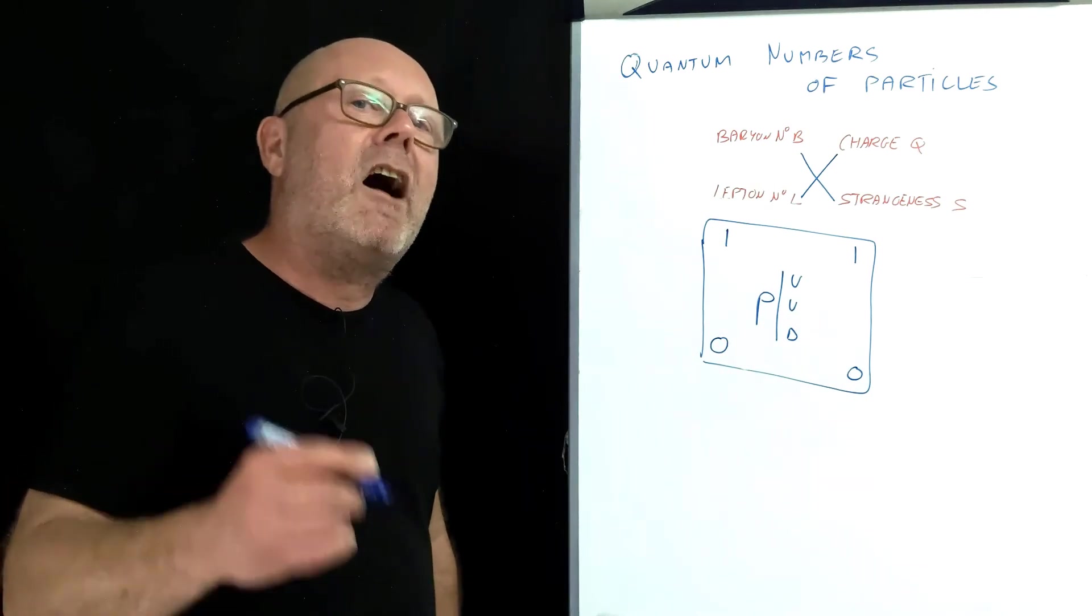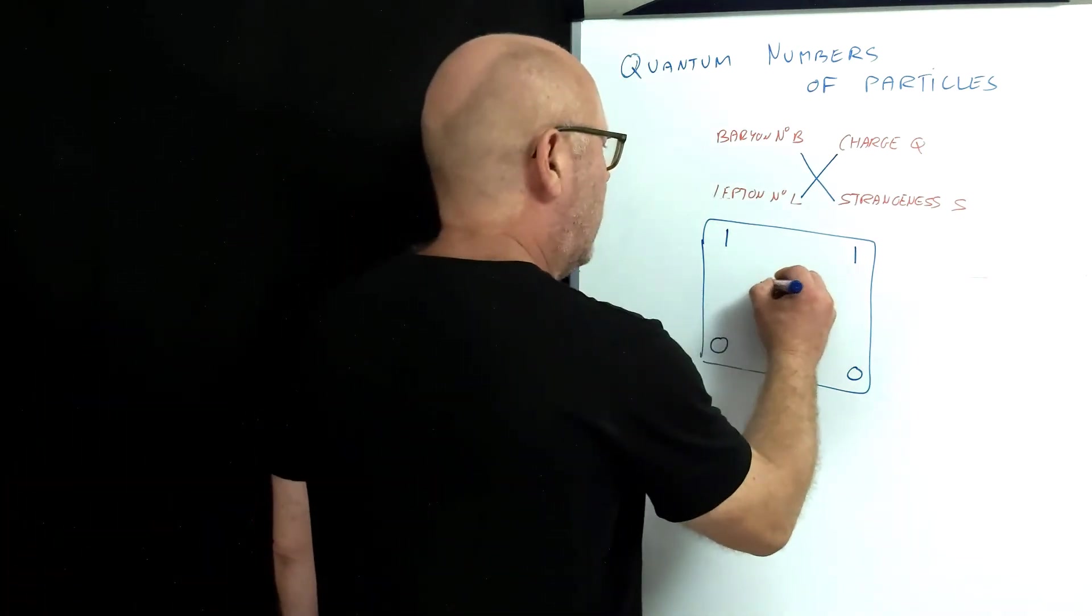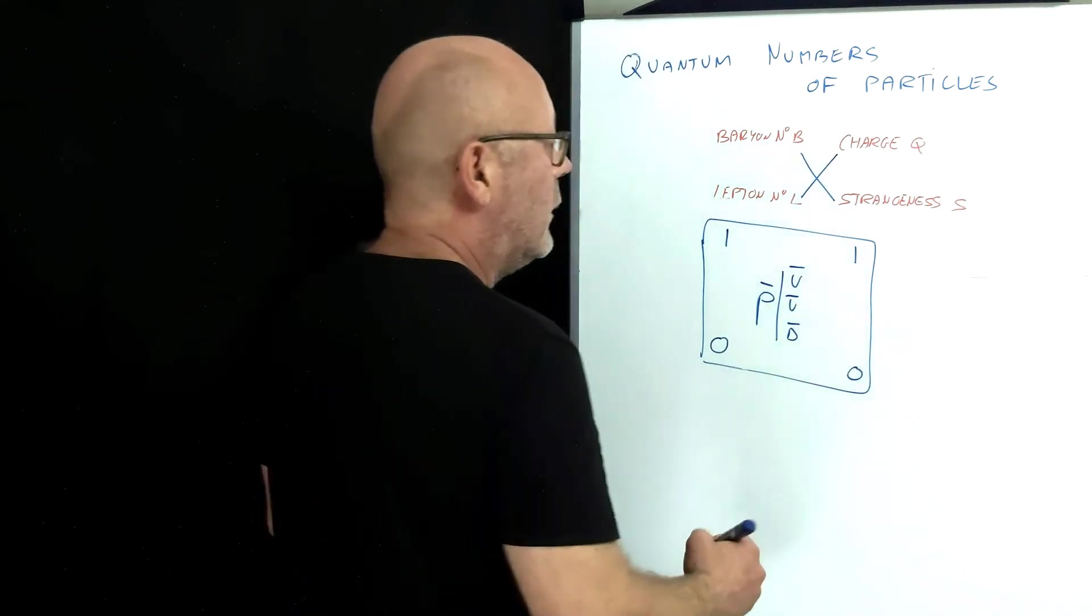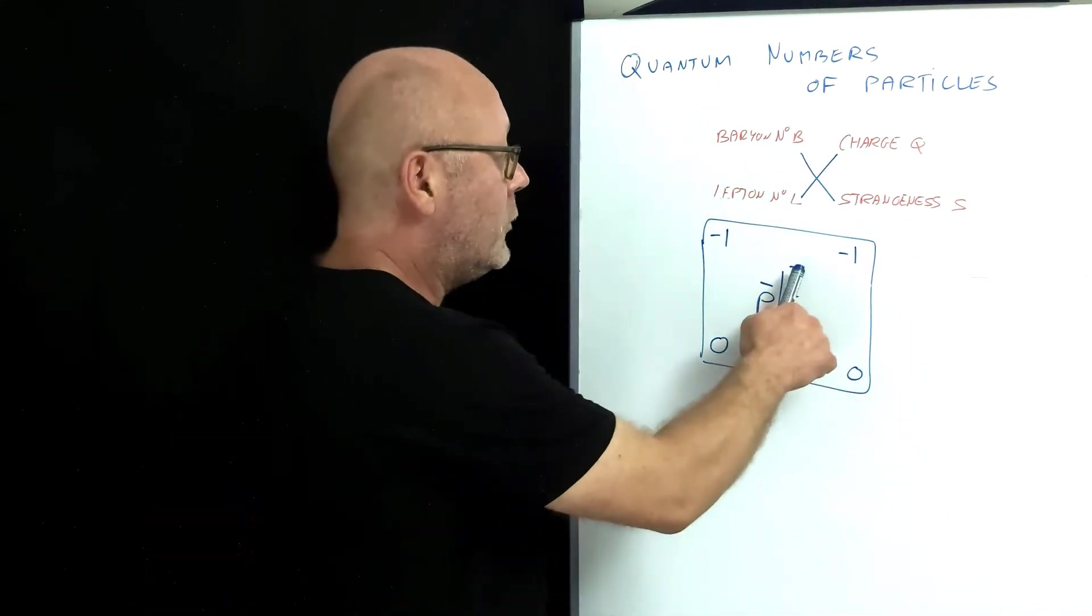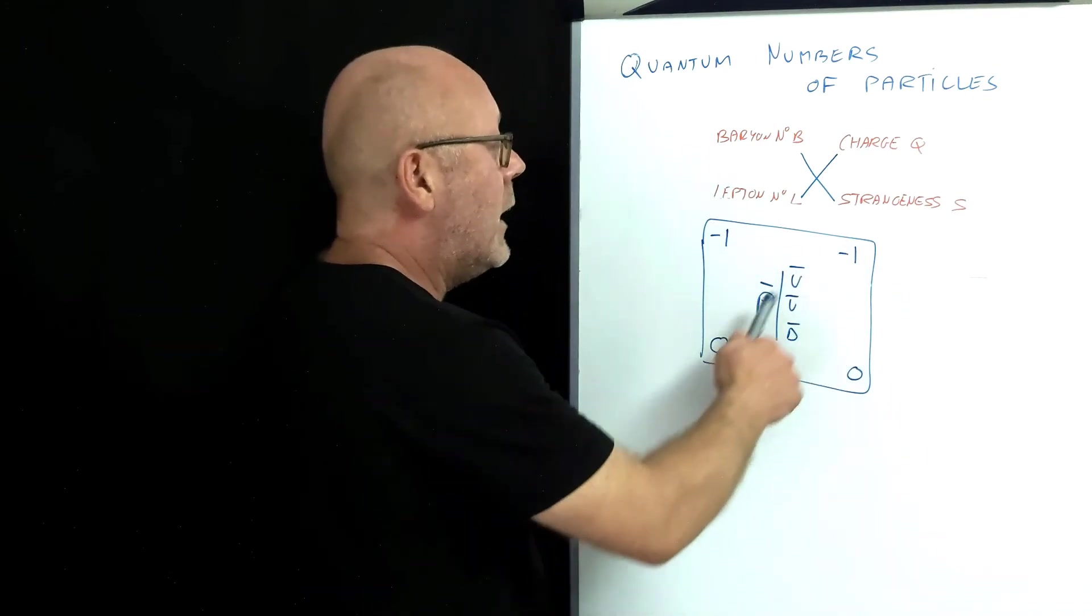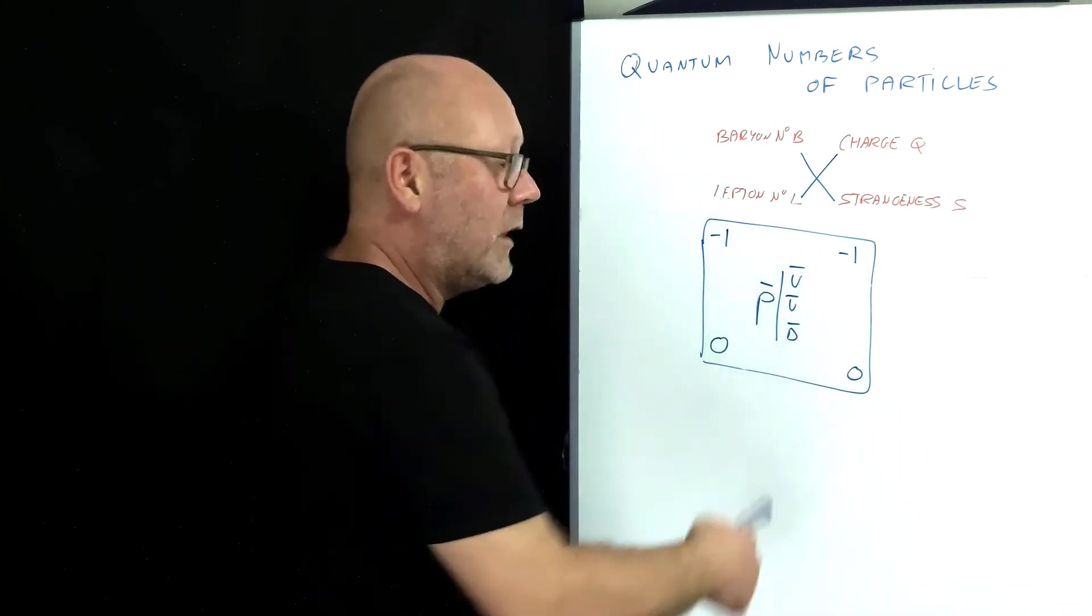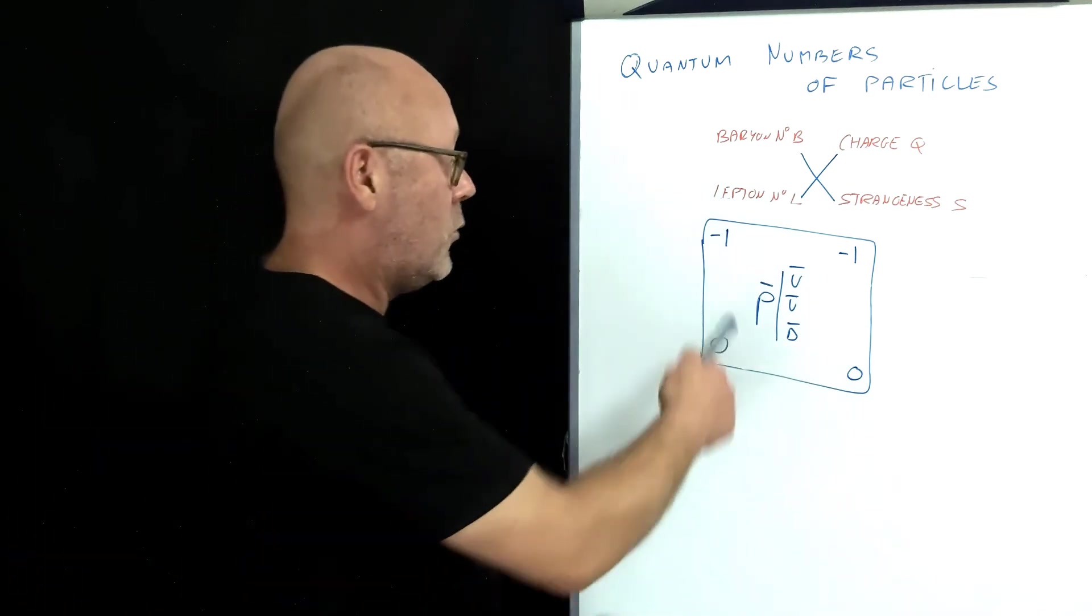If I consider the anti-proton, which is an anti-baryon, then I would just flip the numbers. Minus two thirds, minus two thirds plus one third is minus one, and each of these anti-quarks have got a baryon number of minus one third, giving you minus one.